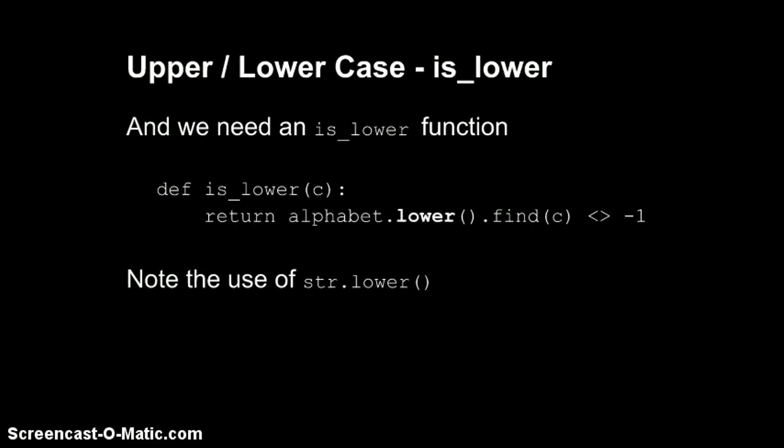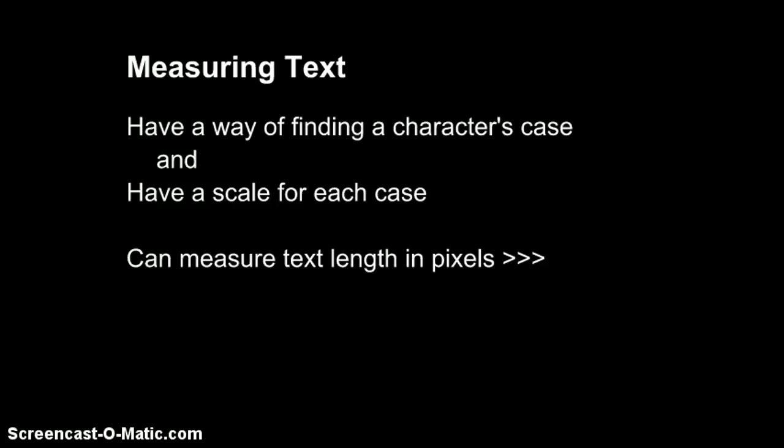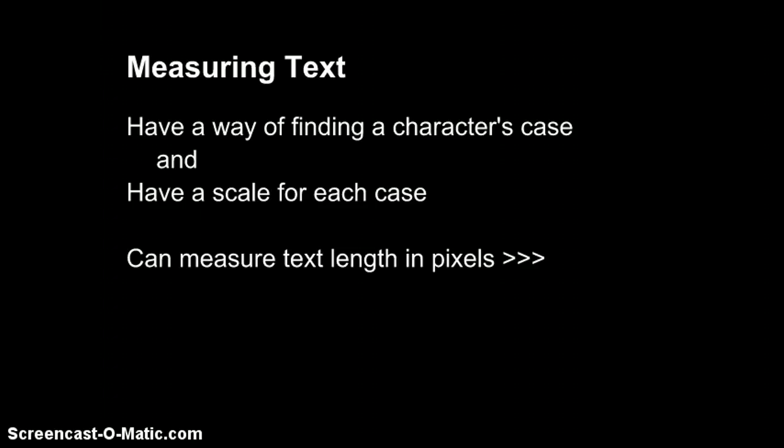Then we have a similar problem. We need to check if a letter is lowercase, so is_lower does that. Notice it's almost identical to is_upper. The only thing that's different here is that I use the to_lower function. Again, we said that alphabet could be upper or lowercase or whatever. Let's just make sure that alphabet is lowercase before we check to see whether C is in it.